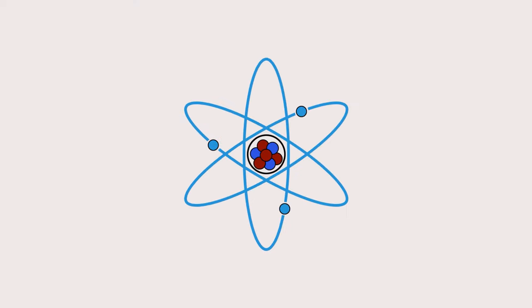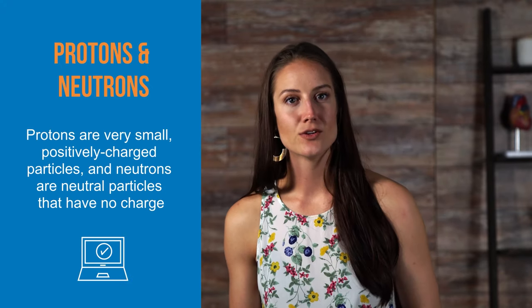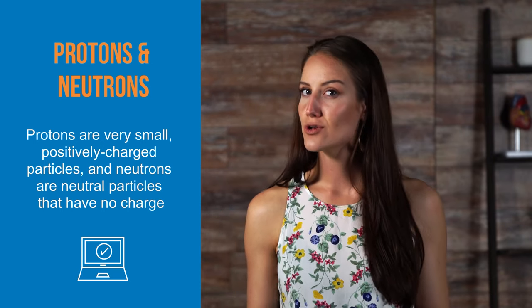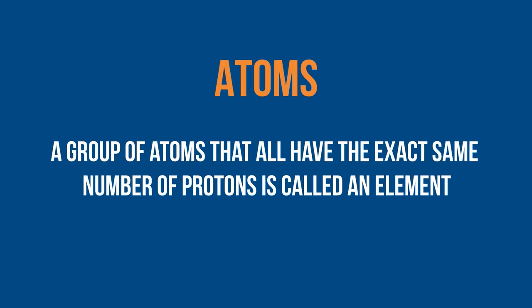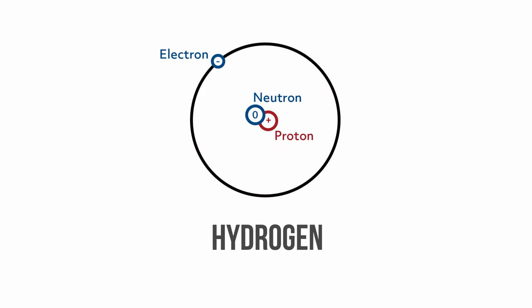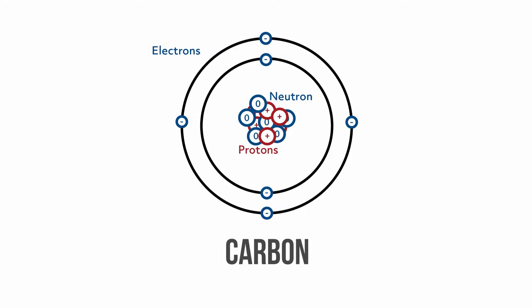Atoms are the building blocks of the universe — they make up everything you see around you. At the very center of an atom is the nucleus, which is made up of small particles called protons and neutrons. Protons are very small, positively charged particles, and neutrons are neutral particles with no charge. Atoms can have just one proton or multiple. A group of atoms that all have the exact same number of protons are called an element. For example, hydrogen is an element with one proton in the nucleus, and carbon is an element with six protons. In general, an atom will have a specific number of neutrons — this is called a stable atom.